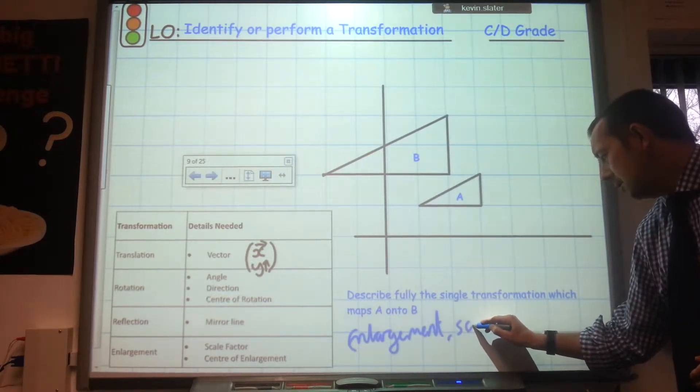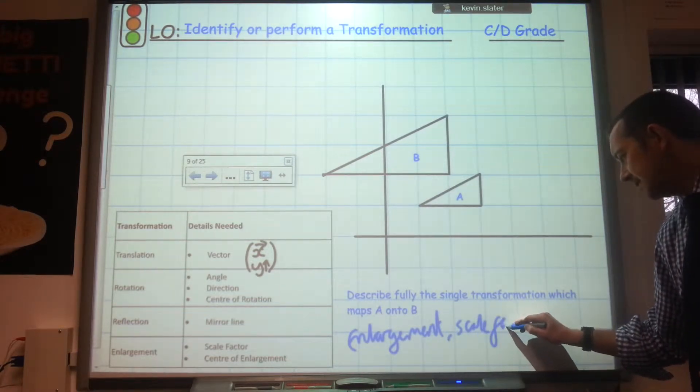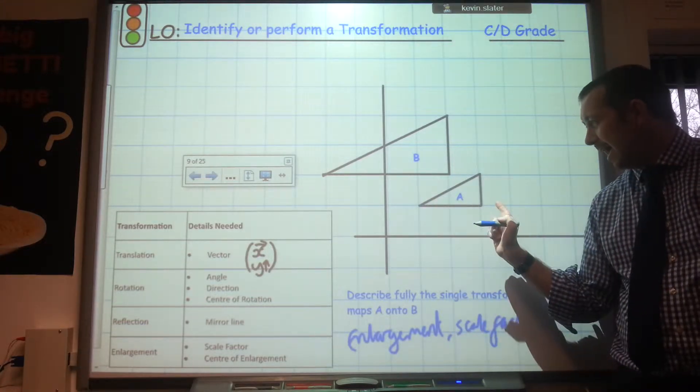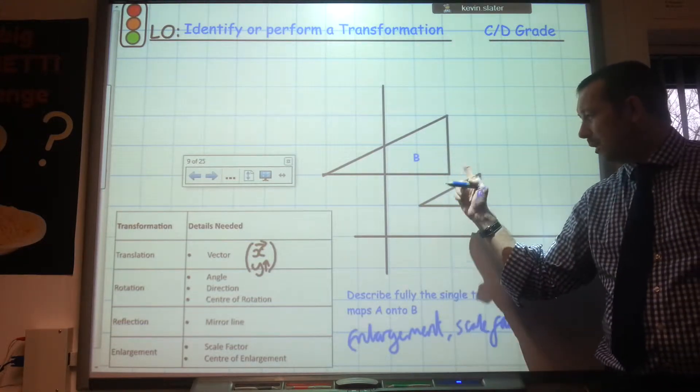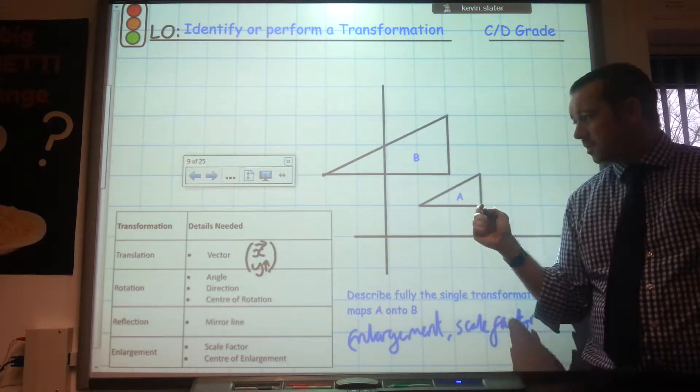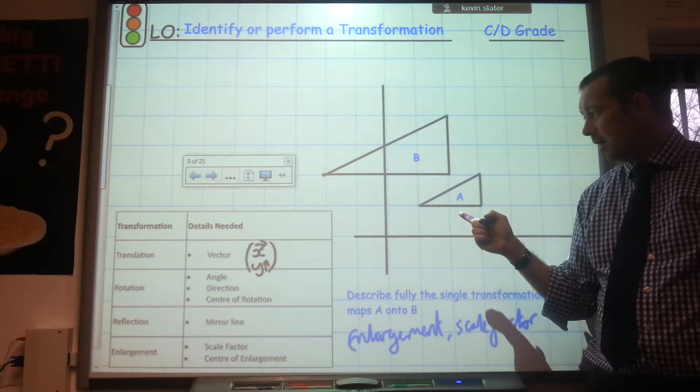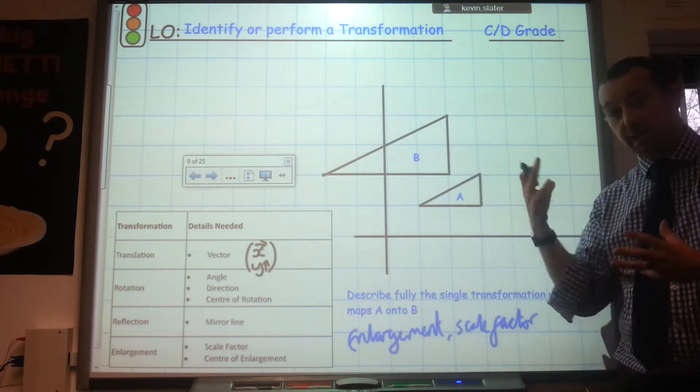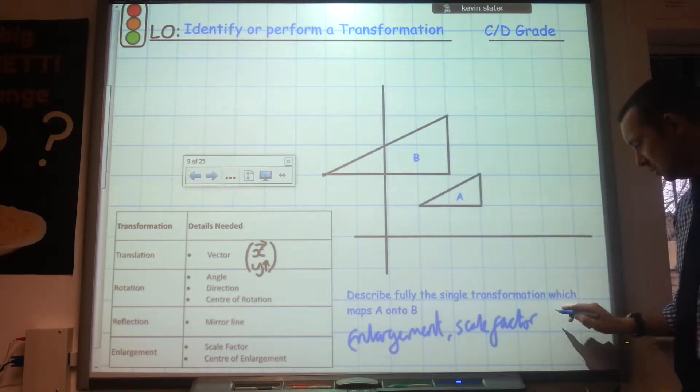So the scale factor, enlargement scale factor. Now if I look at that, that line there is of length 2 and that is of length 4. So really it's got 2 times bigger. And that's length 1 and that's length 2. So yeah, it's 2 times bigger. So the scale factor is 2.